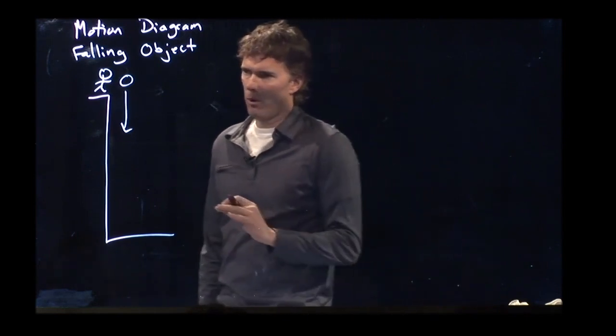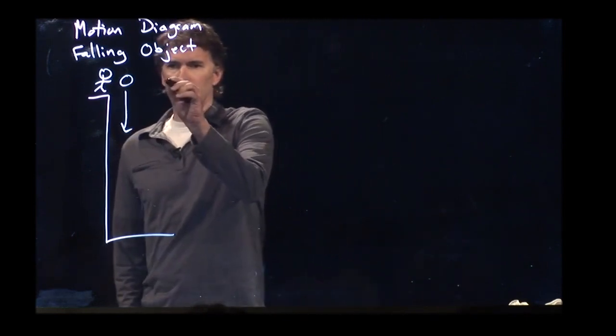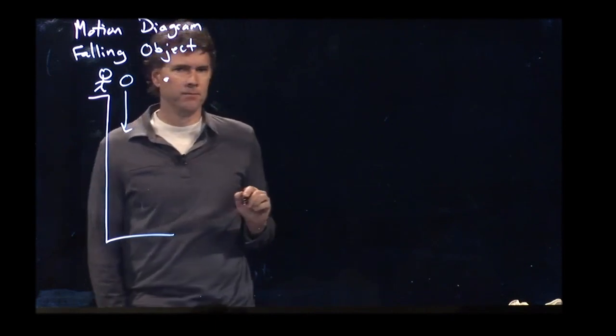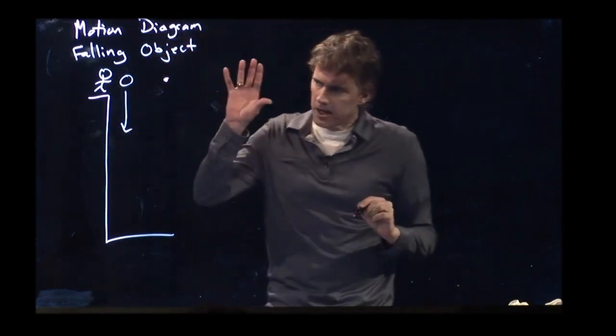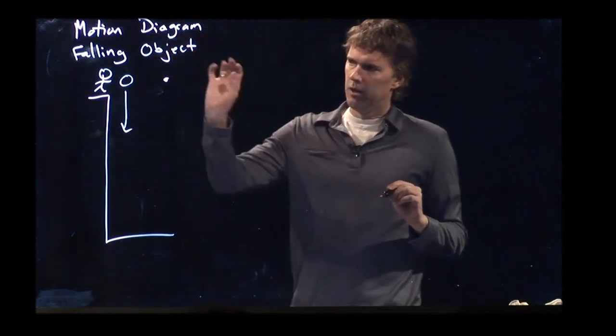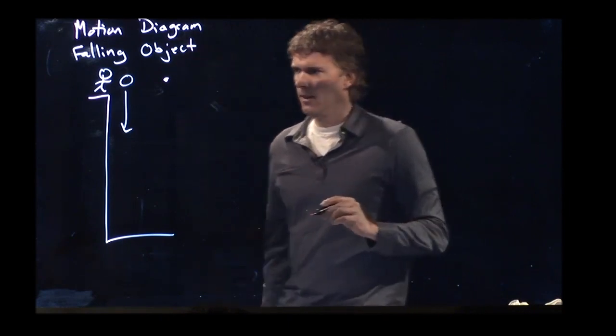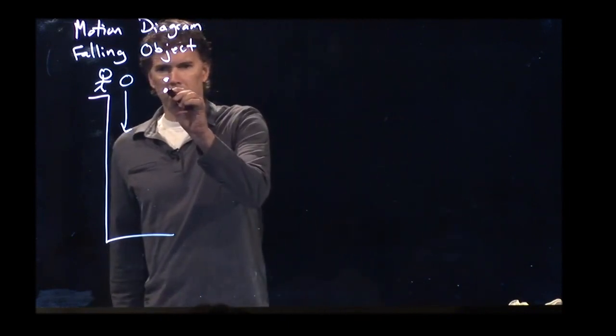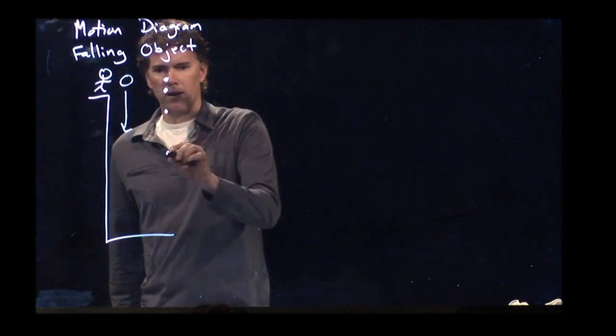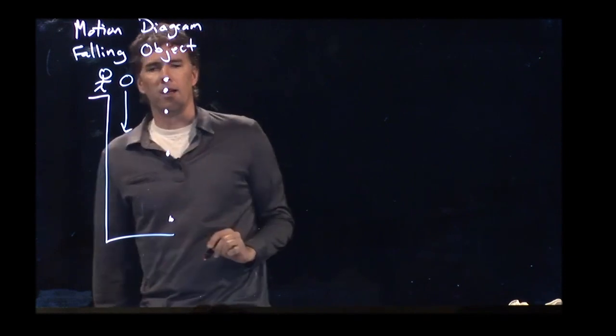Well, like we said before, the ball you can represent with a dot. So the first time that your camera takes a picture of this thing, the ball is at that height. The next time it is there, and it's there, and it's there, and it's there, and then it's there.